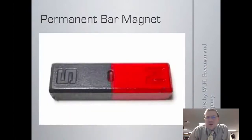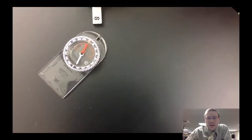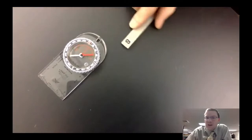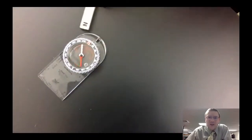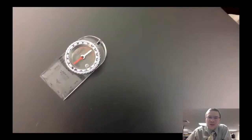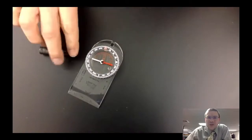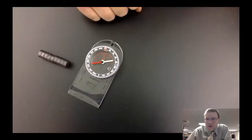The second thing we looked at in the lab was a permanent bar magnet. A permanent bar magnet or compass has two sides: a red side, which we call the north end, and a white side, which we call the south end. When you move a permanent bar magnet near a compass, it reacts — opposite poles attract and similar poles repel. That's why the north always attracts the white side and the south attracts the red side. If a magnet isn't labeled, you can use the compass to tell you which side is north and which is south.